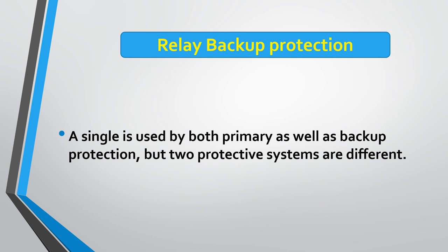In relay backup protection, a single relay is used by both primary and backup protection, but the protective systems are different. So one sensing element serves both primary and secondary protection, but the protective systems themselves are distinct.